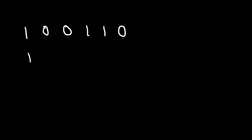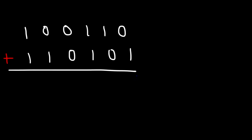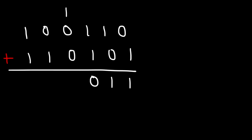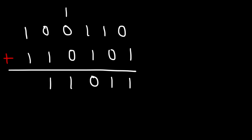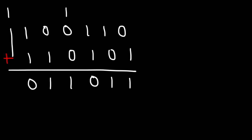Now let's go ahead and try another example. Go ahead and add these two binary numbers — feel free to pause the video if you want to try this example. So let's start with the column on the right side. 0 plus 1 is going to be 1. And then in the next column, we have 1 plus 0, which is 1. And then it's 1 plus 1, which is going to be 0, but we need to carry over a 1. Now for the fourth column, it's 1 plus 0 plus 0, which will equal 1. And then we have 0 plus 1, which is 1. And then next is 1 plus 1, which is 0, but carry over a 1 to the next column, which will give us 1.